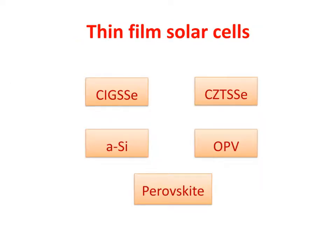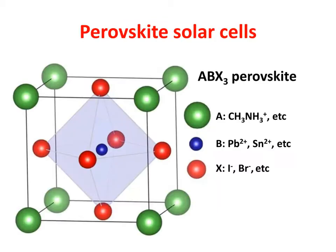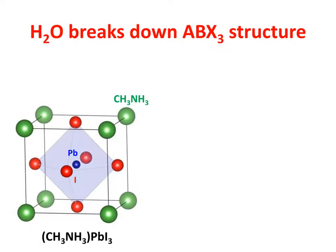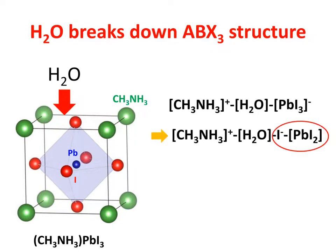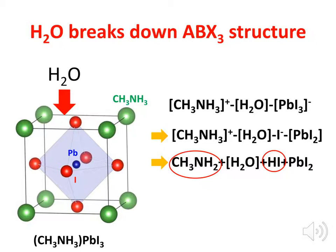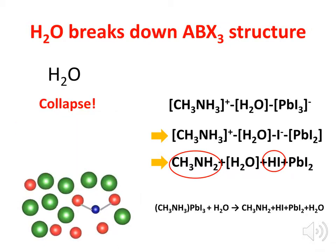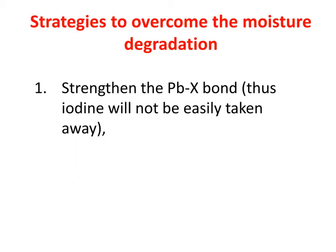Among these thin-film solar cells, perovskite is an emerging solar cell. ABX3-structured perovskite has high efficiency and low cost. However, its key drawback is environmental stability, especially against moisture. When the A-site cation contains NH3, such as CH3-NH3, the B-site is lead and the X-site is iodine. The water molecule is easily trapped between the A-site and PbI3, and further dissociates PbI3, creating an iodine radical which attacks the NH3 group in the A-site, consequently collapsing the whole ABX3 structure.